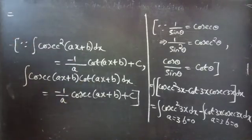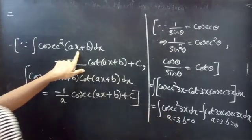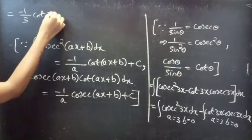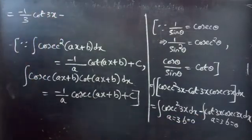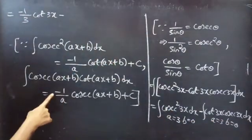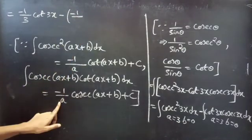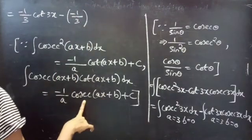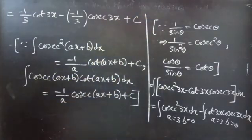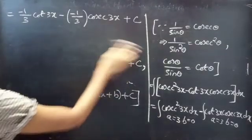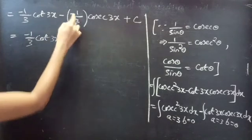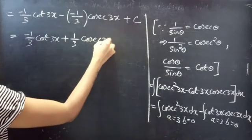So this becomes: for the first integral, cosecant²(ax) dx gives minus 1 by a — for a equals 3 — times cot(3x). Minus the second integral, cot(ax) cosecant(ax) dx gives minus 1 by a times cosecant(3x), plus constant C. This gives minus 1 by 3 times cot(3x) plus 1 by 3 times cosecant(3x) plus C.